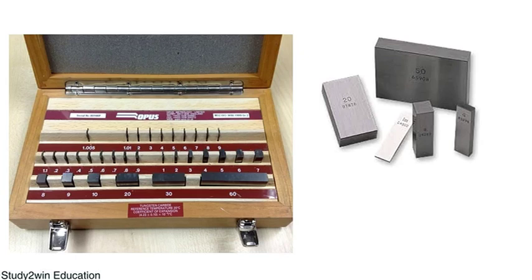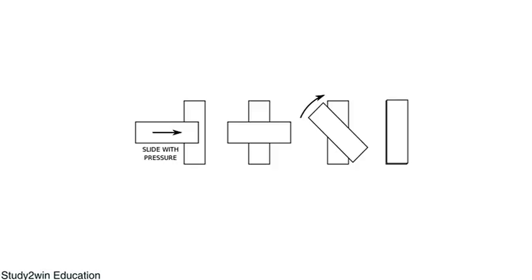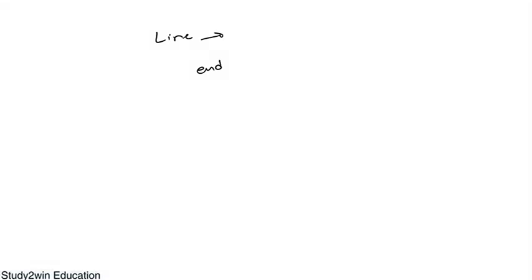Everyone knows there are two kinds of measurements: one is called line measurement and another is called end measurement. Line measurement is what we use while taking a measurement with a scale and so on. End measurements use slip gauges or end bars, where the surfaces of the measurements are important. These are more accurate. Slip gauge is one of the end measurement kinds.